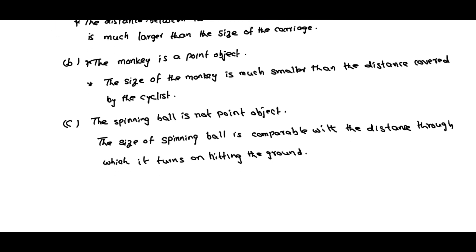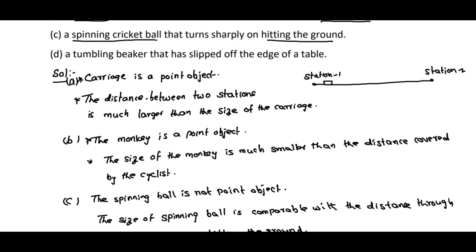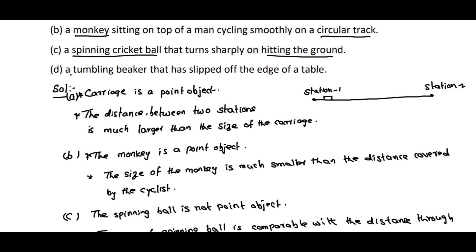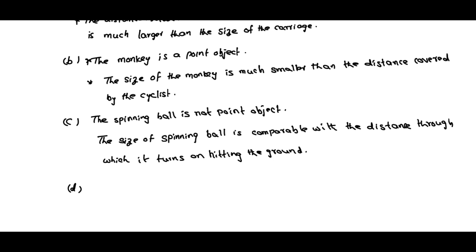Coming to D, a tumbling beaker that has slipped off the edge of a table. If the beaker is falling from the edge of a table, then the height of the table and if you compare the size of the beaker, both will be comparable.